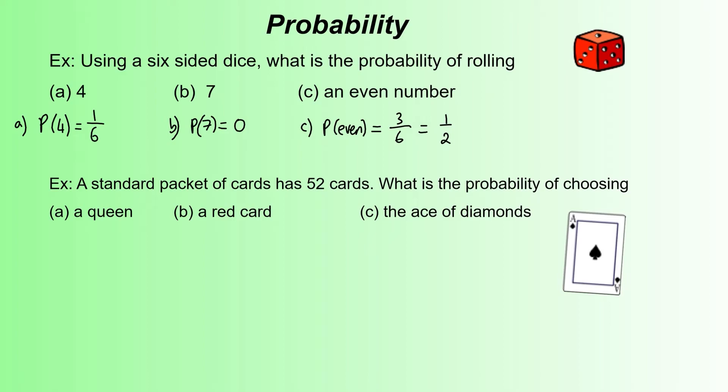Second example: a standard packet of cards has 52 cards. What's the probability of choosing a queen first of all? For part A, probability of choosing a queen.